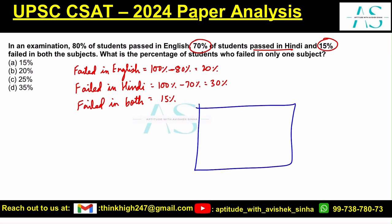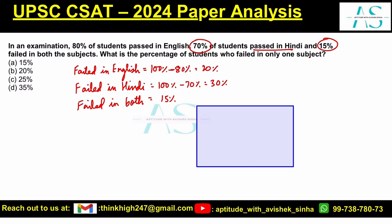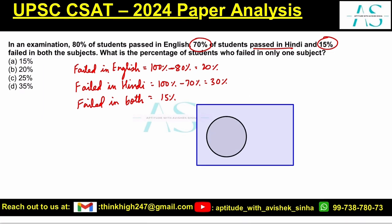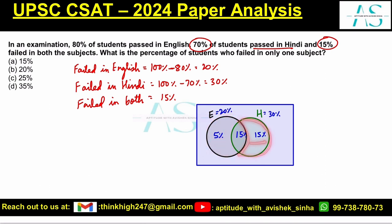If we solve this using a Venn diagram or set theory, we draw one circle representing students failing in English and another representing students failing in Hindi. The common part is 15%. English failures total 20% and Hindi failures total 30%. So the only-English region must be 20% minus 15% = 5%, and the only-Hindi region must be 30% minus 15% = 15%.